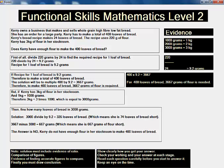If recipe for one loaf of bread is 9.2 grams, therefore to make a total of 400 loaves of bread, the solution will be to multiply 400 by 9.2 equals 3667 grams. Therefore, to make 400 loaves of bread, 3667 grams of flour is required.